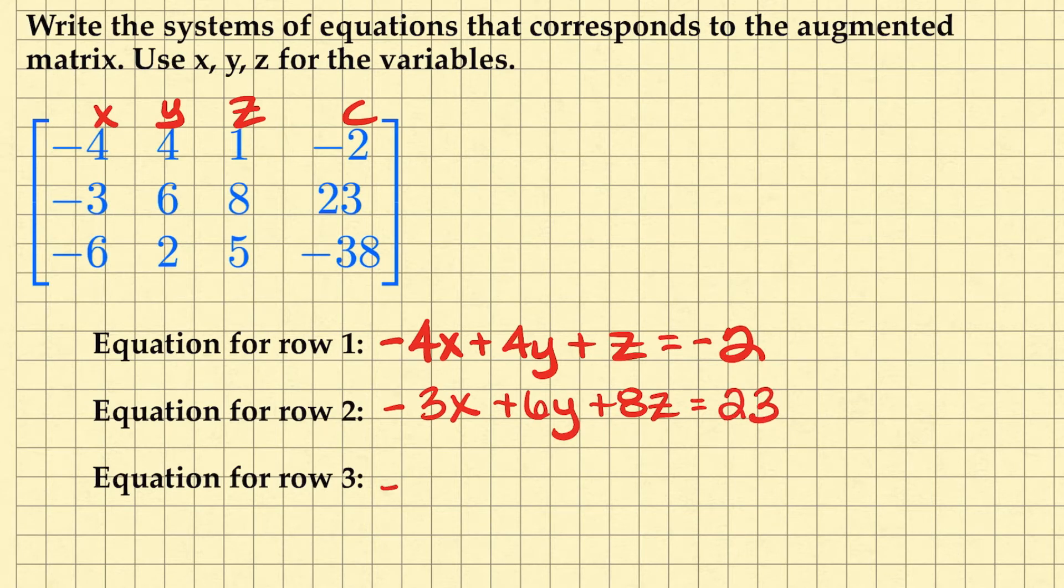And then lastly, I would have negative 6x plus 2y plus 5z. And this would equal negative 38.